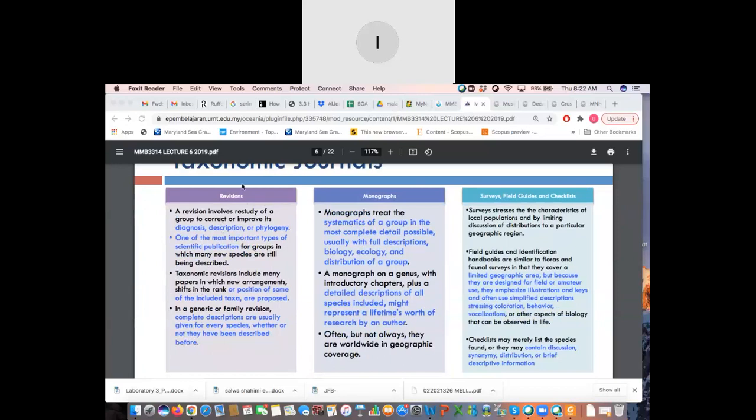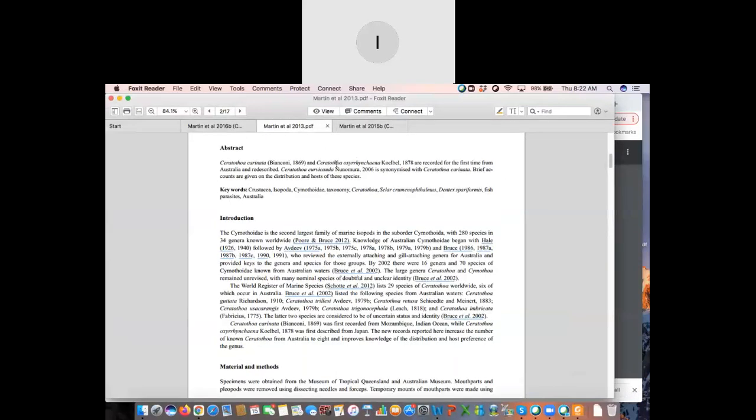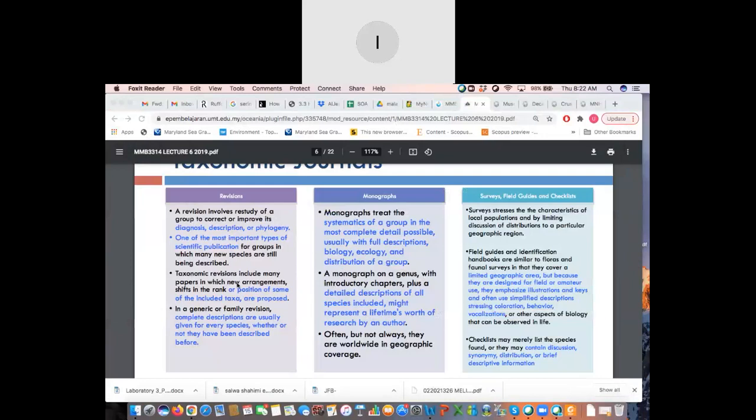So, you have a revision. So, a revision involves a restudy of a group to correct or improve its diagnosis, description, and phylogeny. So, this one is a bit more complex because some will actually include molecular phylogeny, but some it's a revision of diagnosis and description. So, I actually have done a revision here. Sorry, I haven't done a revision. Sorry, it's actually a review. So, a taxonomic revision may include many papers in which new arrangement shifts and rank of the position of some of this included taxa propose. In a generic and family revision, complete descriptions are usually given for every species, whether or not they have been described before.